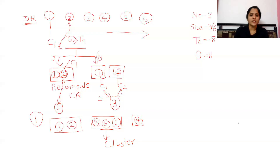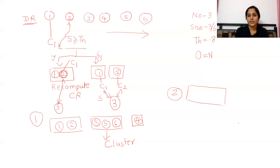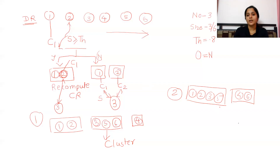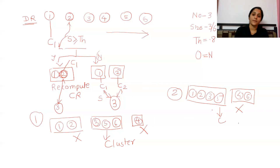In another scenario, if one group has documents 1, 2, 3, and 5 (four documents) and another group has documents 4 and 6 (two documents), then only the group with four documents satisfies the minimum cluster size of 3 and can be called a cluster. The group with only two documents cannot be called a cluster.